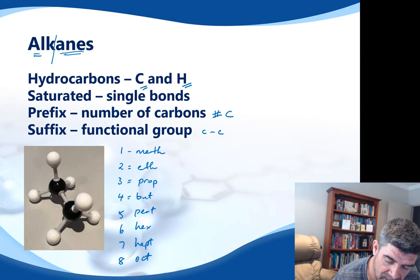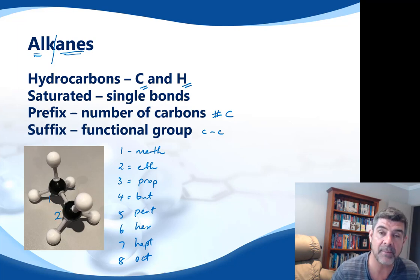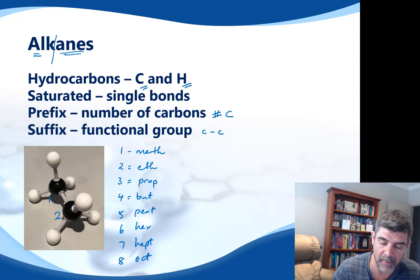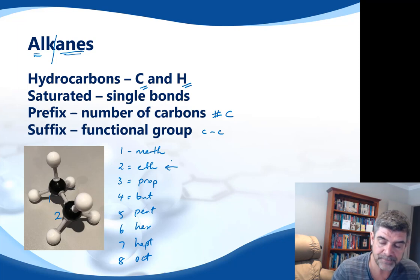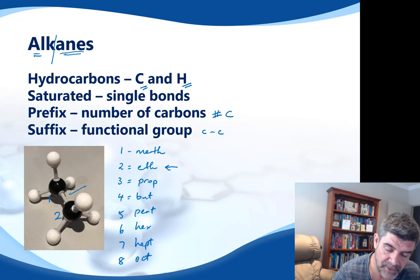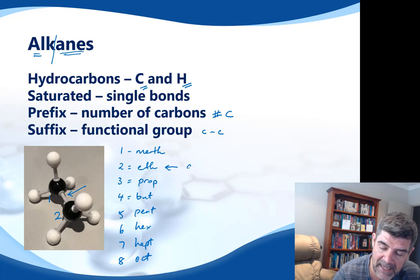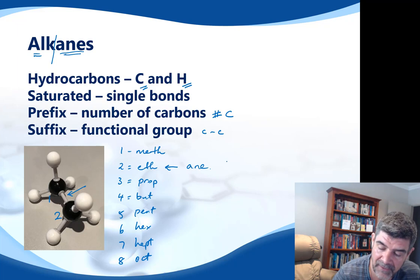Here you can see there are two carbons — the little black balls are carbons. So there are two carbons in this compound, and therefore the prefix would be 'eth'. Because it's only a single bond between the two carbons, we have '-ane' as our suffix, and therefore we have a compound known as ethane.